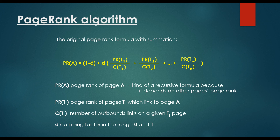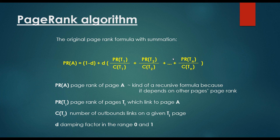PR(A) is the PageRank of website A. It is a recursive formula because the PageRank of A depends on the PageRank of other websites. PR(Ti) is the PageRank of pages Ti which link to page A — we just have to consider the websites that are pointing to page A. The C parameter is the number of outbound links on a given Ti page, so we divide the PageRank of each pointing site by its number of outgoing links, and sum over every single website pointing to website A.